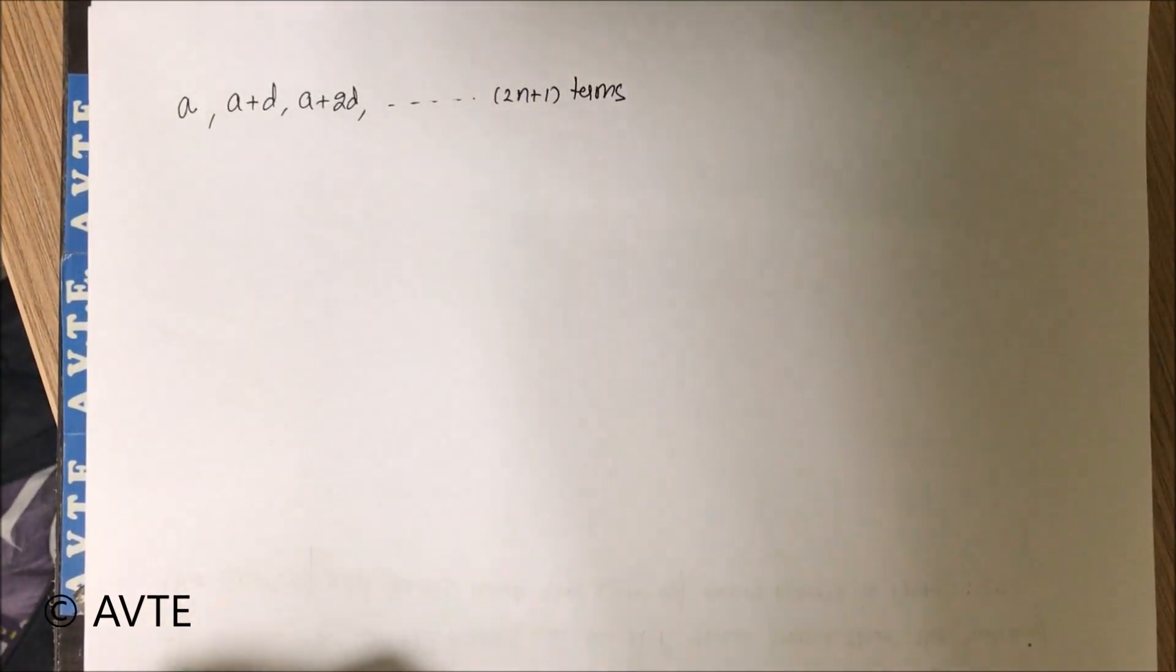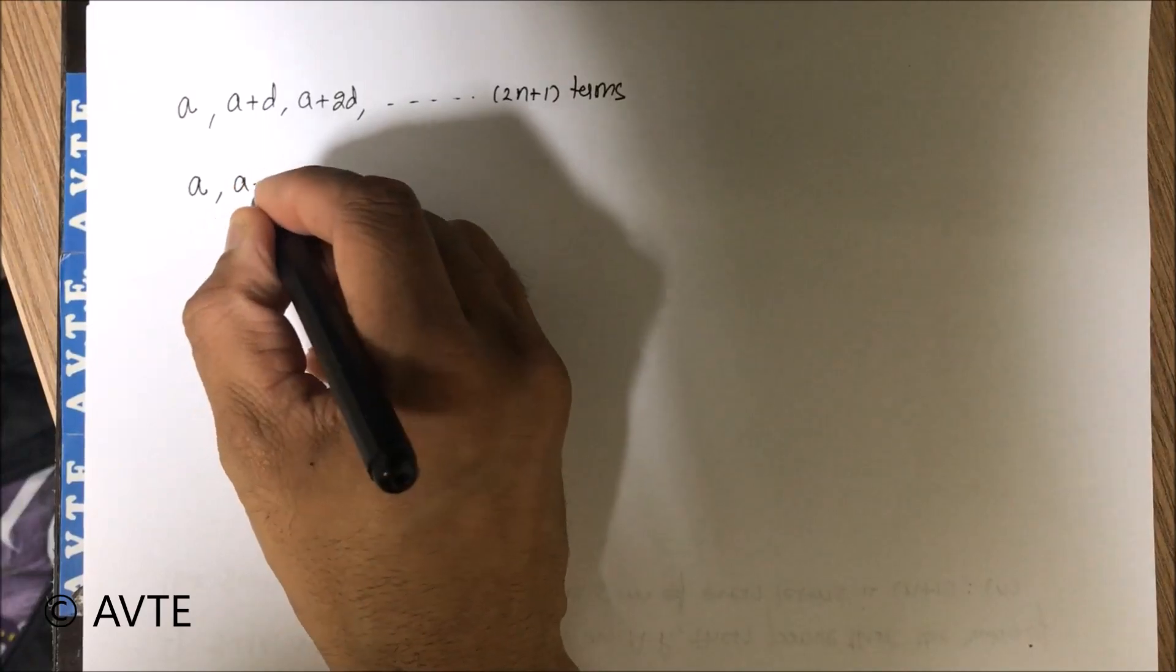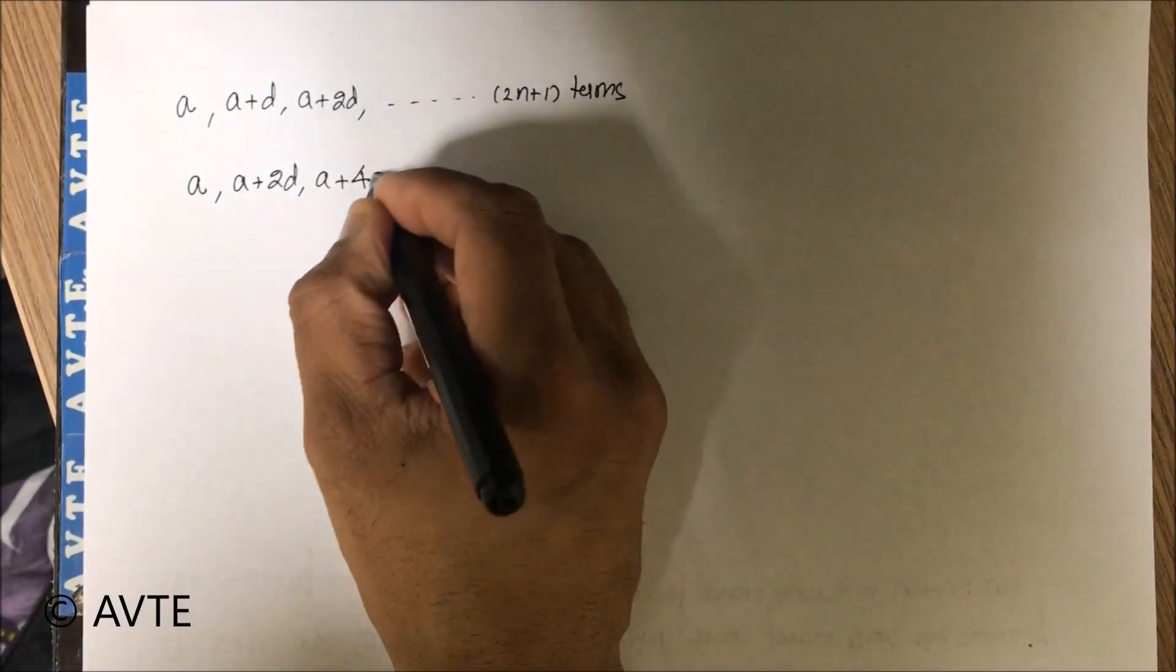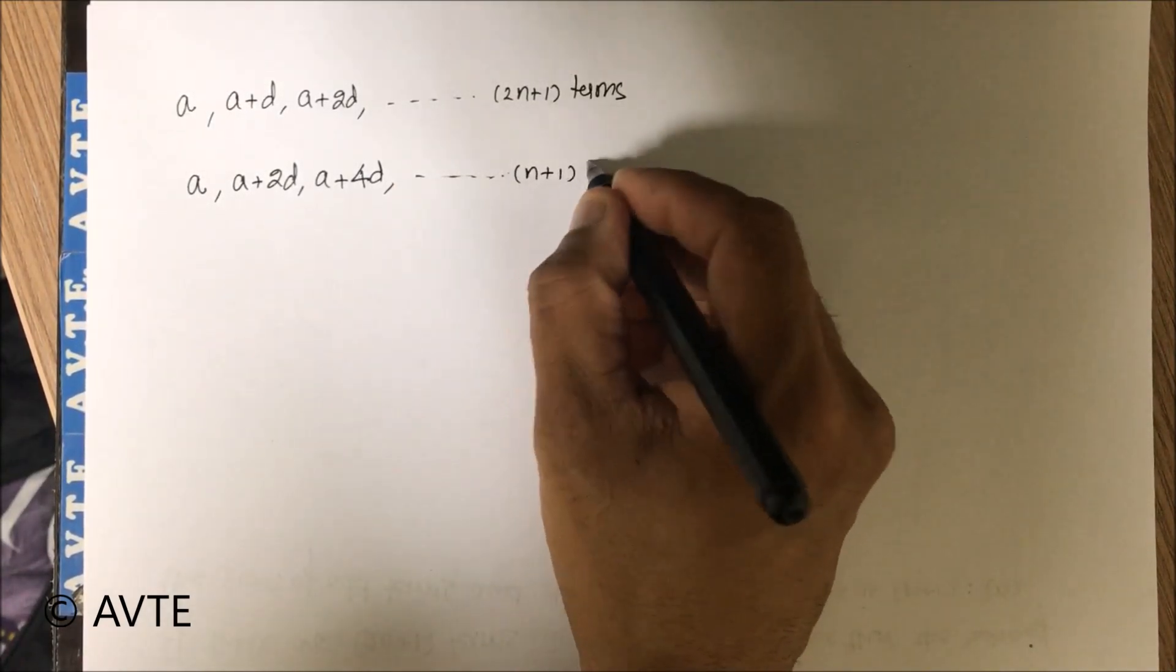Now I collect odd terms. So this is a, a plus 2d, a plus 4d, up to n plus 1 terms.